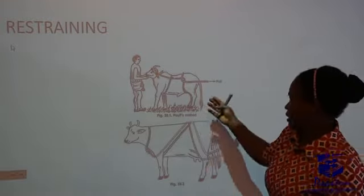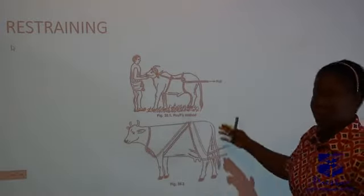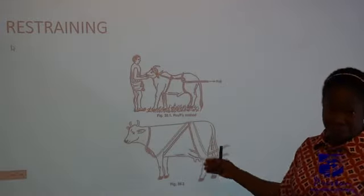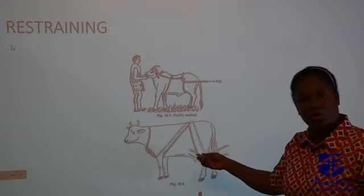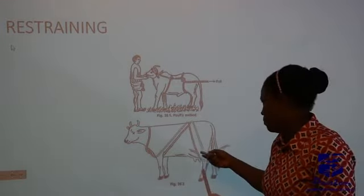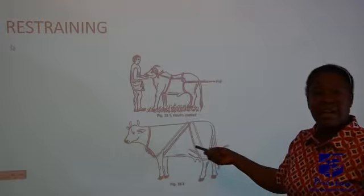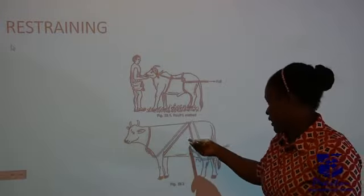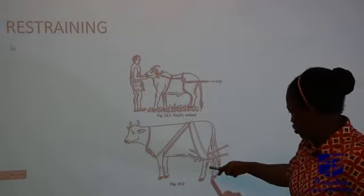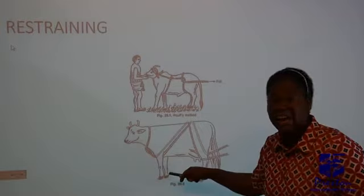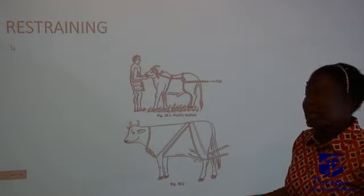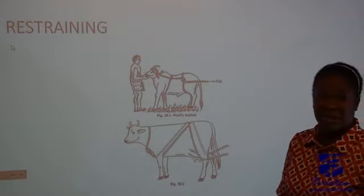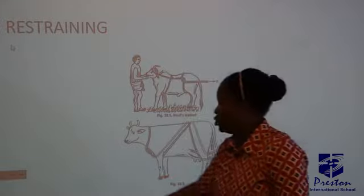This is another way you can restrain them if you want to dip them or drench them. This is also very, very important if you want to administer a vaccine to them. You need to restrain their forelegs and their hind legs. That's another practice that you need to do to make the animals to be in perfect condition.